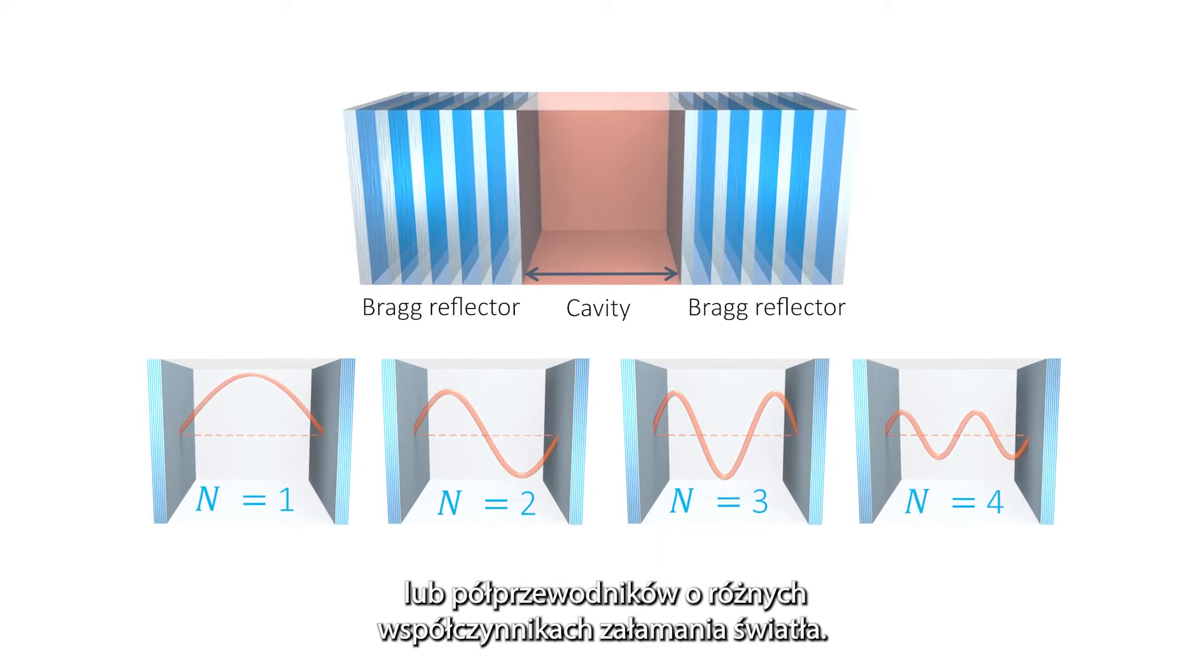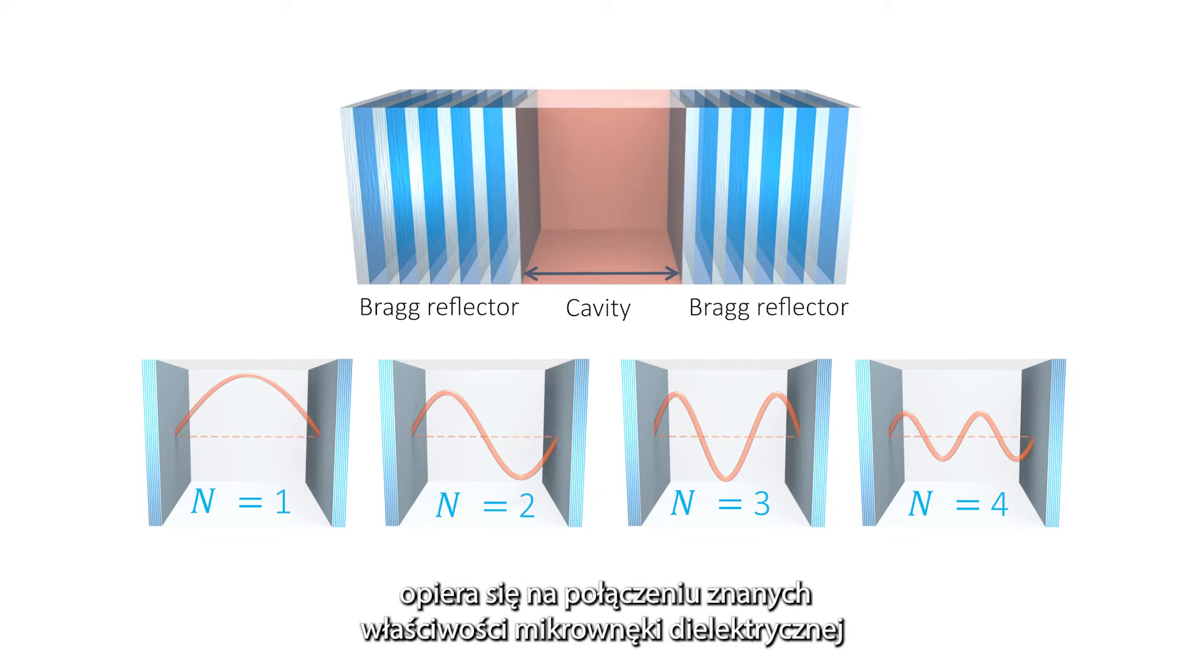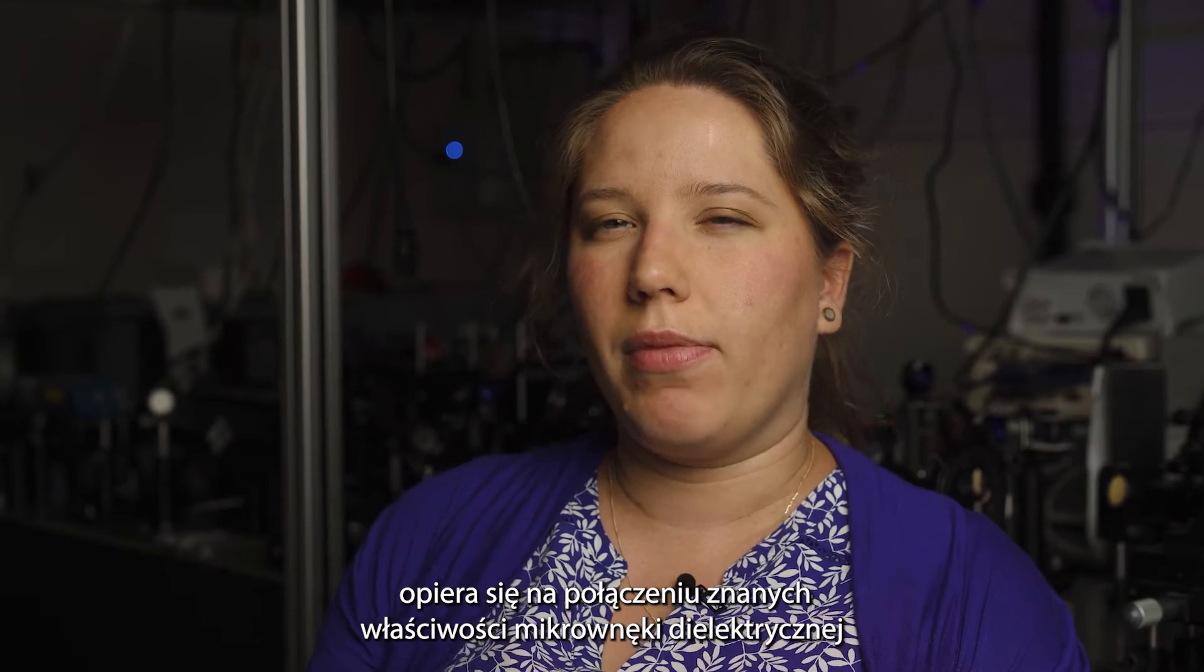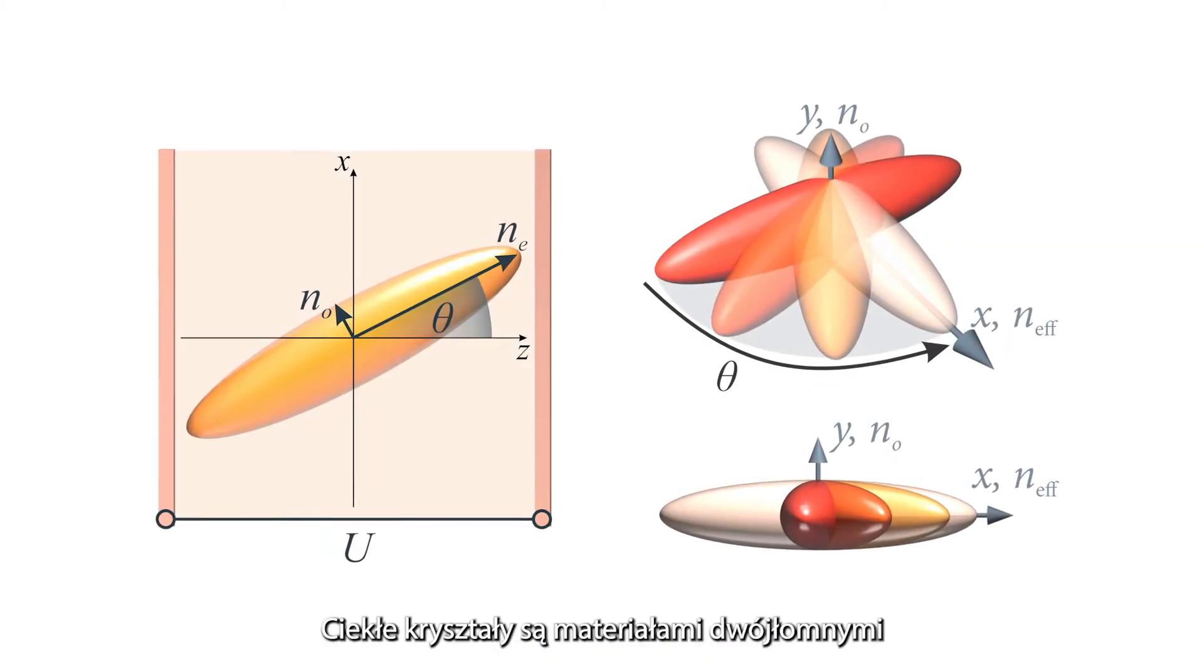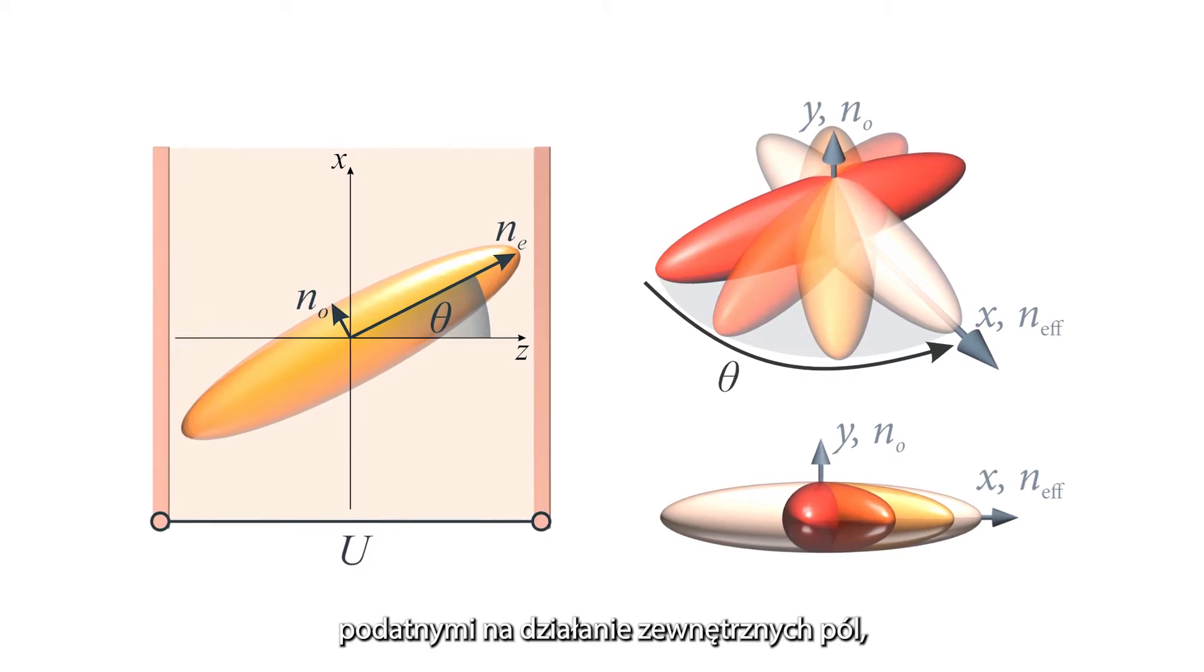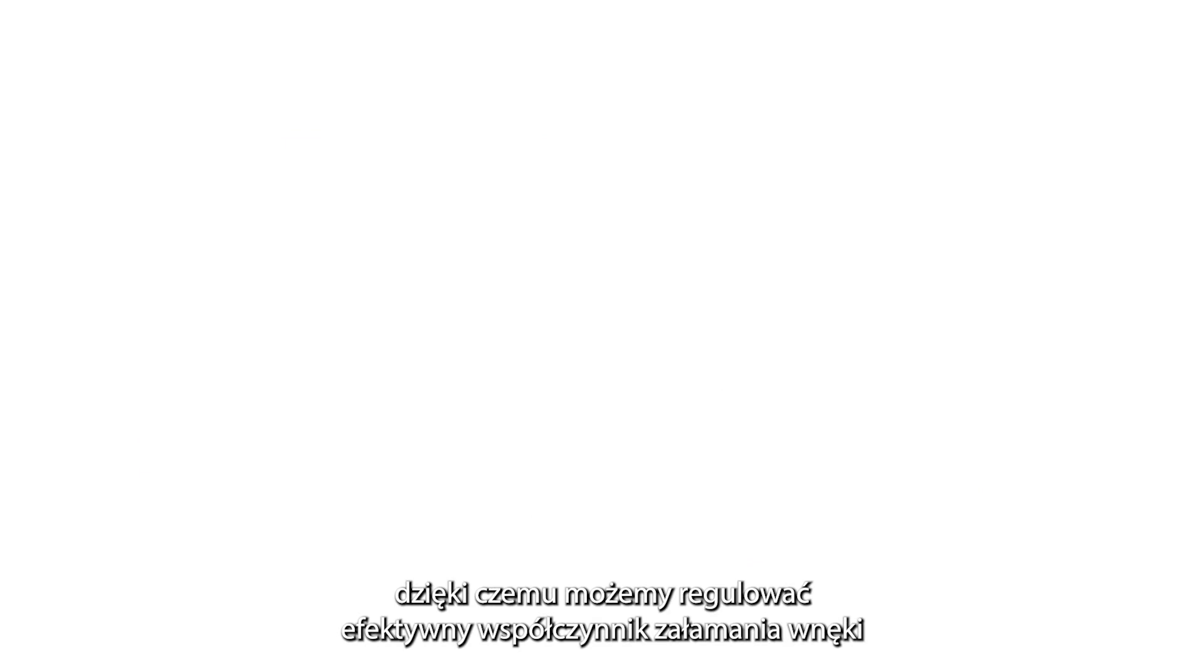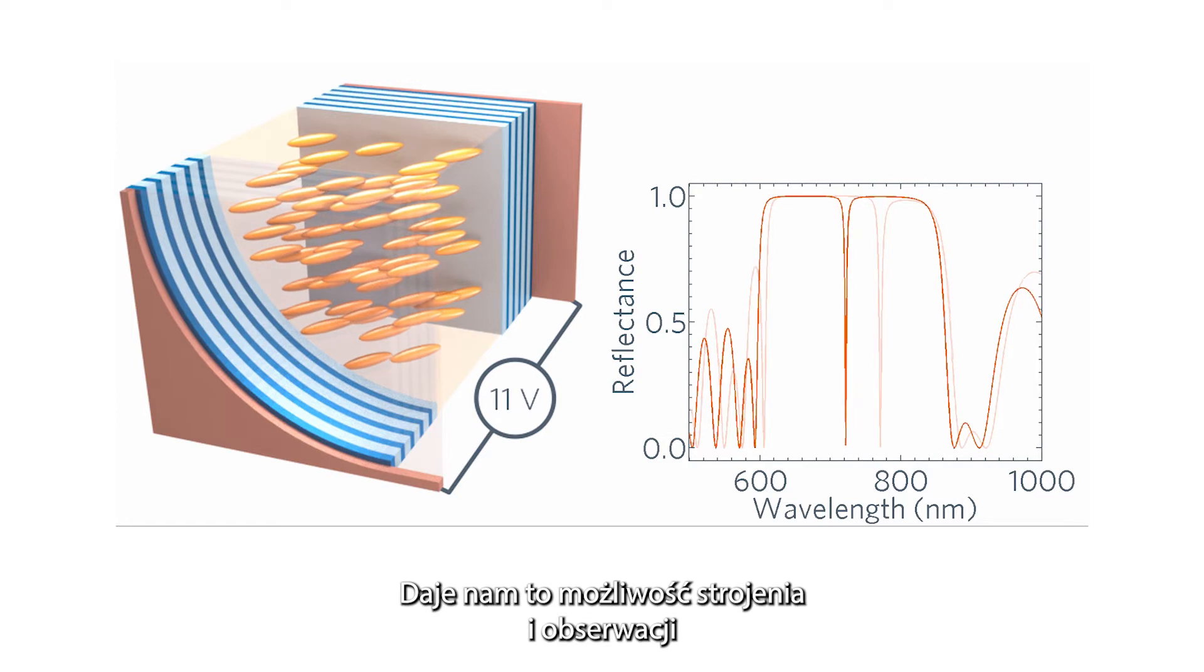Our idea of liquid crystal micro cavity is based on the combination of known properties of dielectric cavity and properties of liquid crystal. Liquid crystals are birefringent materials that are sensitive to external fields, for instance electric field. So we can tune the effective refractive index of the cavity in one direction, and this gives us control over tuning and crossing of the photonic modes.